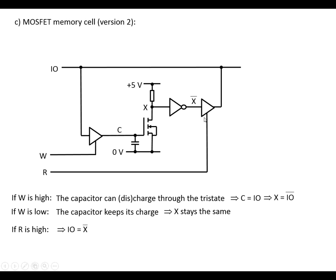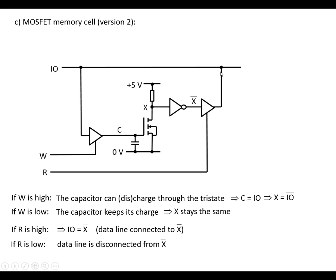If R is held high, then it means that the data line is going to be connected to X bar, which is the opposite of X. So if we've got a 0 here at C, X is going to be a 1, X bar is going to be a 0. So a 0 here connects the data line to a 0. A 1 here — that's going to be 0, that will be a 1. So if the capacitor is charged, it means that the input-output line will be high. If R is low, we disconnect the data line from X bar as before.